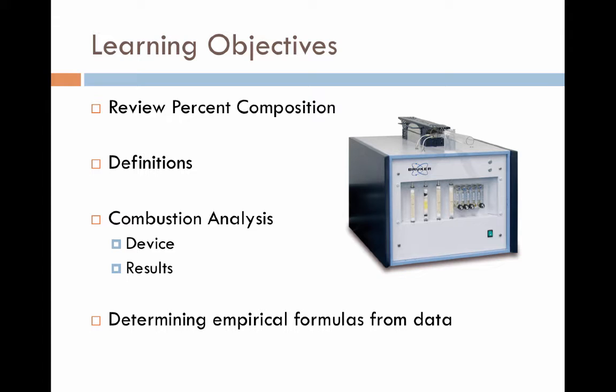Once we've identified what percent composition is, we'll talk about key definitions that show up in this section, and then we're going to focus primarily on the process of combustion analysis. We'll talk briefly about the device used for combustion analysis. We've got a picture of one of those types of devices right here. Then we'll talk about what results combustion analysis gives us. From the results, we're going to be able to go through a mathematical process to determine the empirical formula of a chemical substance. As we get through, we'll get into more details about what empirical formulas are all about.